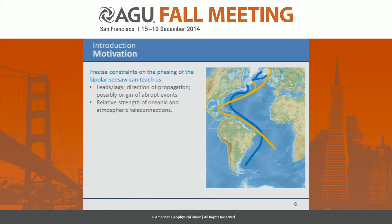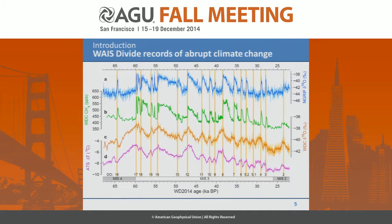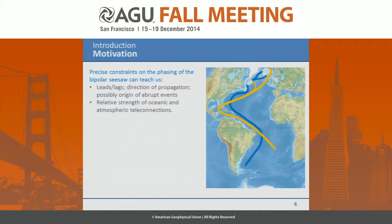What I'll be looking at is the precise timing of Northern Hemisphere and Southern Hemisphere climate. Typically, to synchronize these ice cores and look at relative phasing, we use the methane record, because methane is a global signal measurable both in Antarctica and in Greenland, allowing us to synchronize the chronology of both ice cores. By knowing the precise timing on both hemispheres, we can say something about leads or lags, the direction of propagation, and the mode by which the signal is propagated between hemispheres.